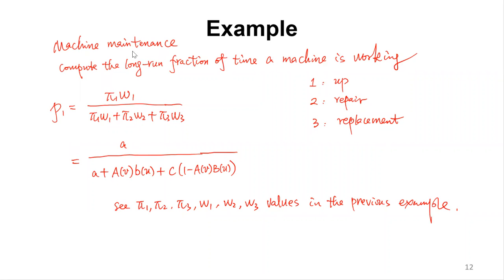Let's revisit the machine maintenance example to compute the long-run fraction of time the machine is working (state 1). p1 = π1 * w1 / Σ(i=1 to 3) πi * wi. With w1 = A (the expected lifetime), and using the previously computed π1, π2, π3 and the other wi values, we obtain the expected long-run fraction of time the machine is working.